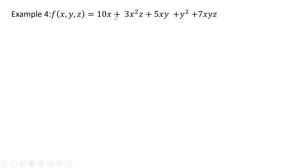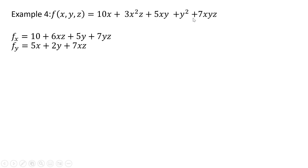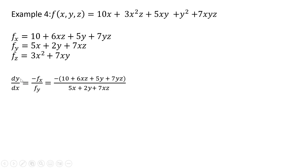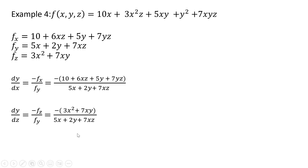Finally, Example 4. This time we have 3 variables on the right-hand side: x, y, and z. We can take the partial derivative with respect to x and get back this result. Then we take the partial derivative with respect to y and get back this result. We can also take the partial derivative with respect to z and get back 3x squared plus 7xy. From these we can form the derivative of y with respect to x, the derivative of y with respect to z, and also the derivative of x with respect to y and the derivative of x with respect to z.